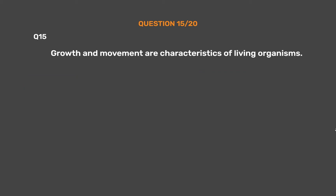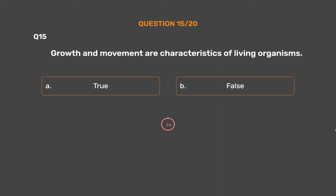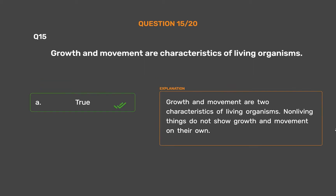Question 15. Growth and movement are characteristics of living organisms. Option A: True. Option B: False. The correct answer is Option A: True. Growth and movement are two characteristics of living organisms. Non-living things do not show growth and movement on their own.